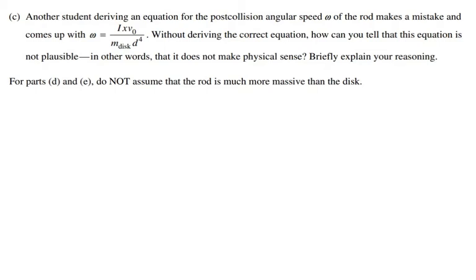For Part C, another student makes a mistake and derives a different formula: omega equals inertia I times distance times initial velocity of the disk, divided by mass of the disk, all divided by the length of the rod to the fourth power. Without deriving the correct equation, you need to explain why this formula is not physically plausible.